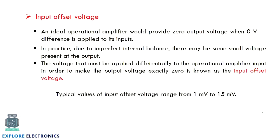One more concept is input offset voltage. For an ideal op-amp, the output should be 0 when there is no input. If a small voltage appears at the output, there is an internal imbalance in the circuit. To make that output 0 we need to adjust the offset voltage — provide an extra input so the op-amp output becomes 0. That voltage is called the input offset voltage, and it typically ranges from 1 millivolt to 15 millivolts.